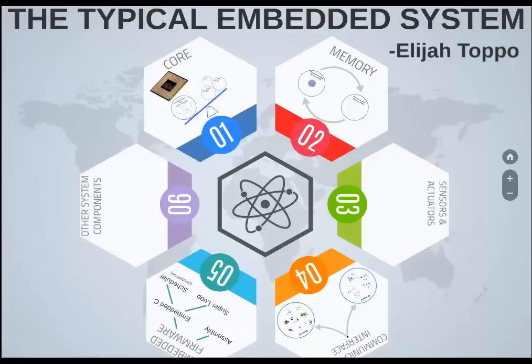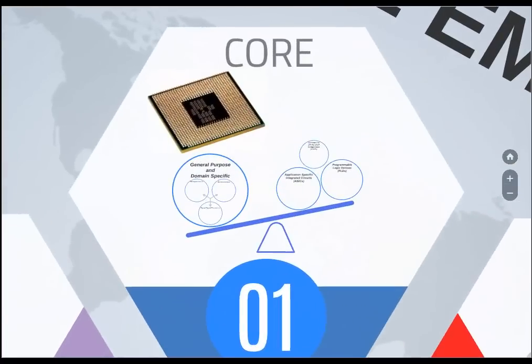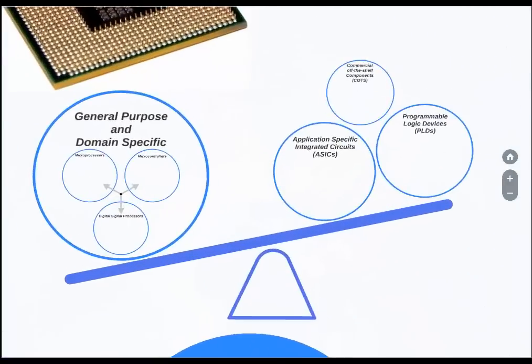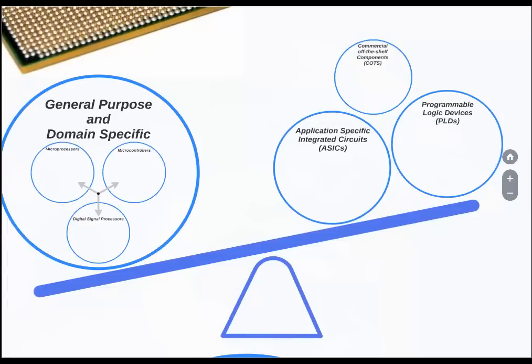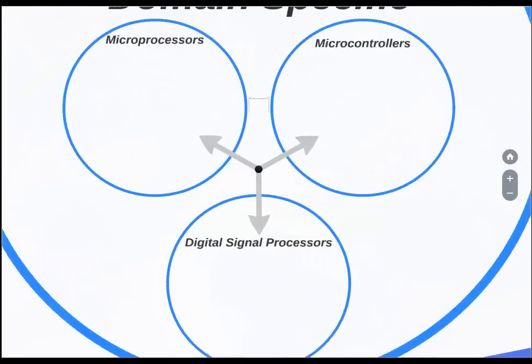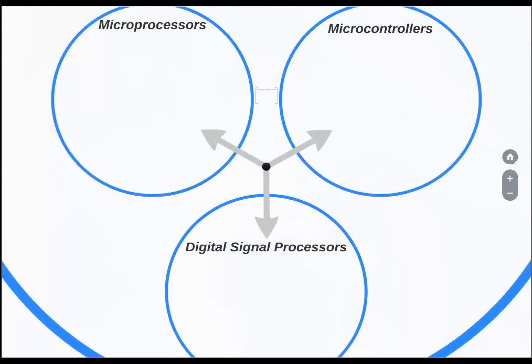Embedded systems are domain and application specific and they are built around the central core. The core can be further divided into classifications. Almost 80 percent of all embedded systems are made from general purpose and domain specific processors. The rest are made from ASICs or programmable logic devices or commercial off-the-shelf components. General purpose and domain specific processors can be further classified into microprocessors, microcontrollers, and digital signal processors.